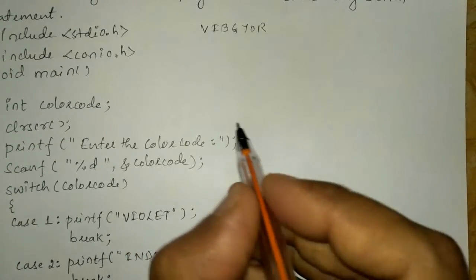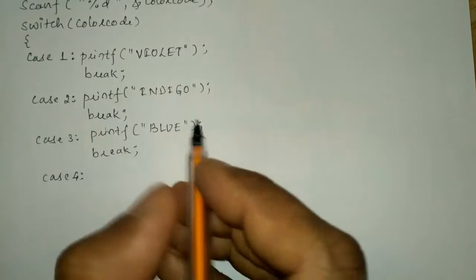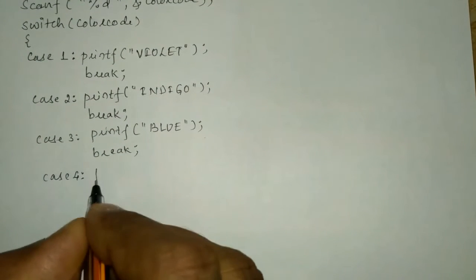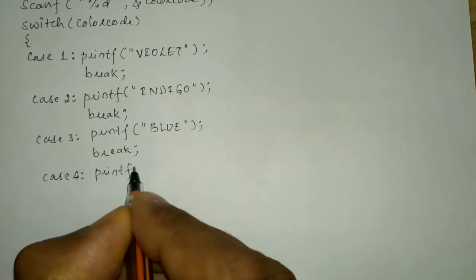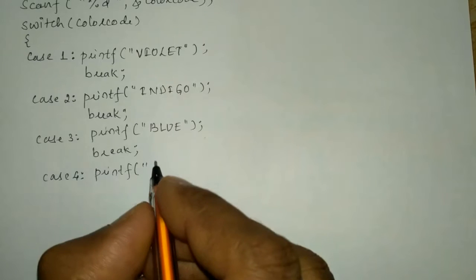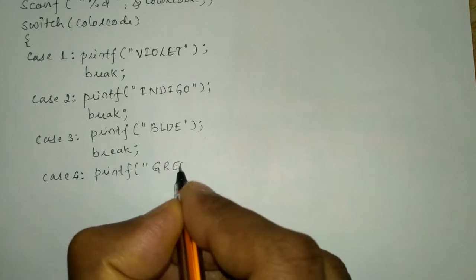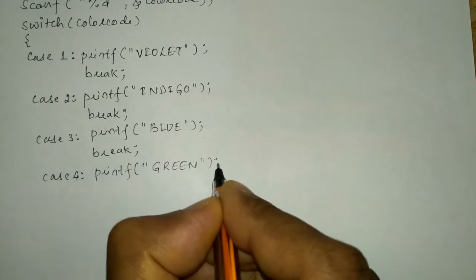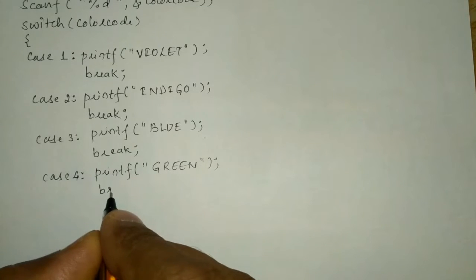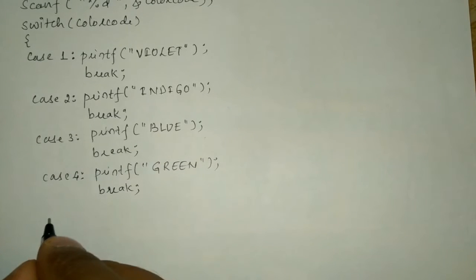For case four, after blue we have green. We'll write a printf statement and in double quotation marks write 'green', end the double quotation mark, put a semicolon, and again write the break statement.